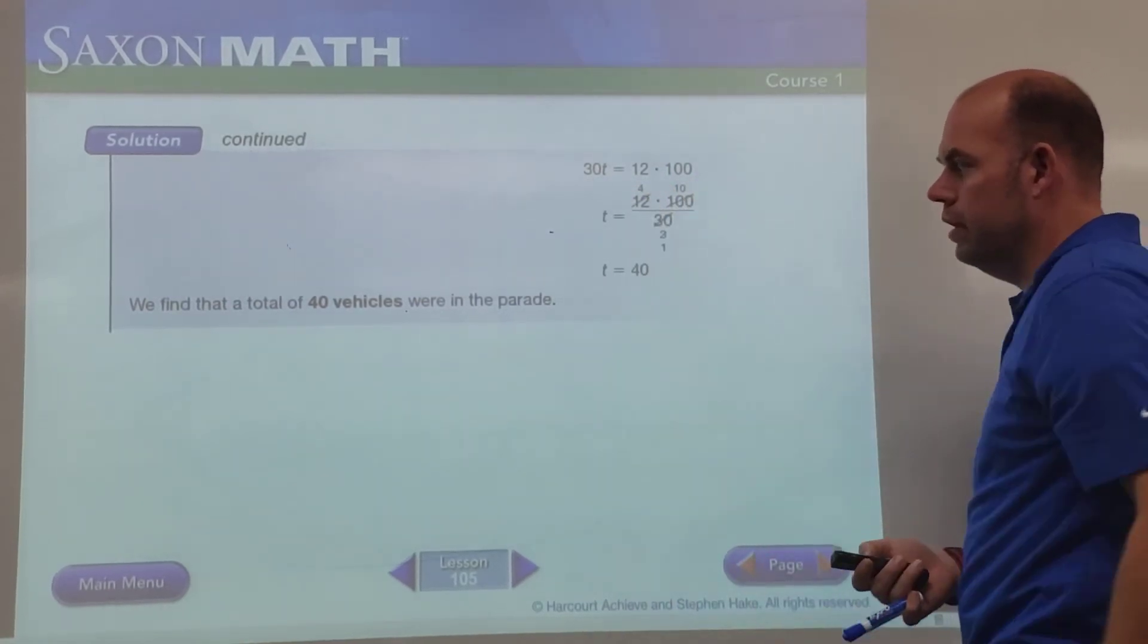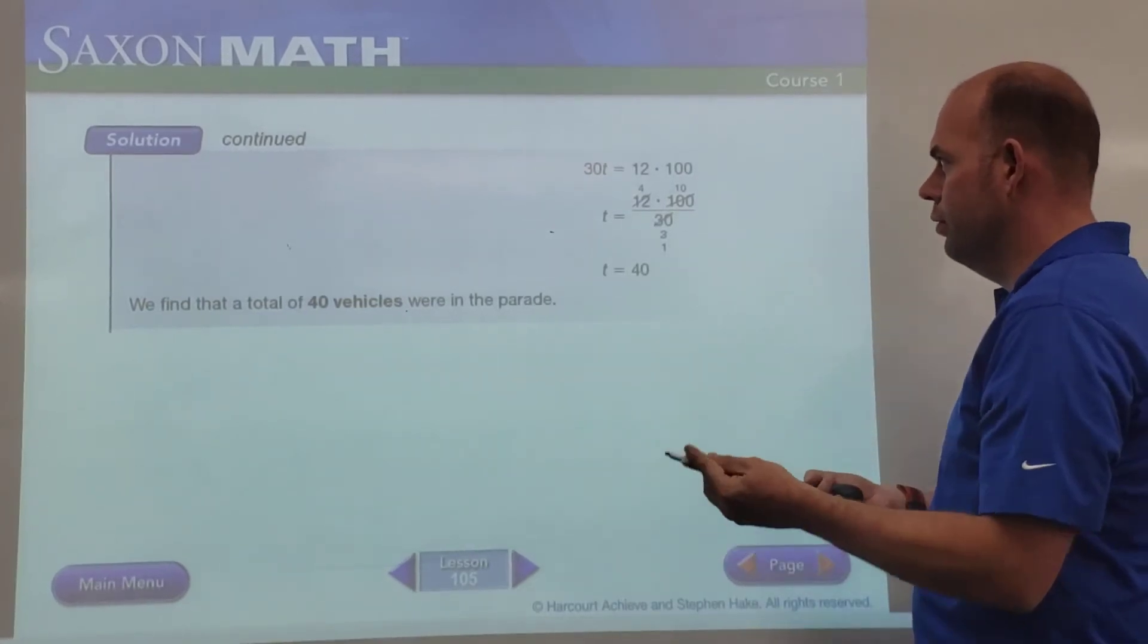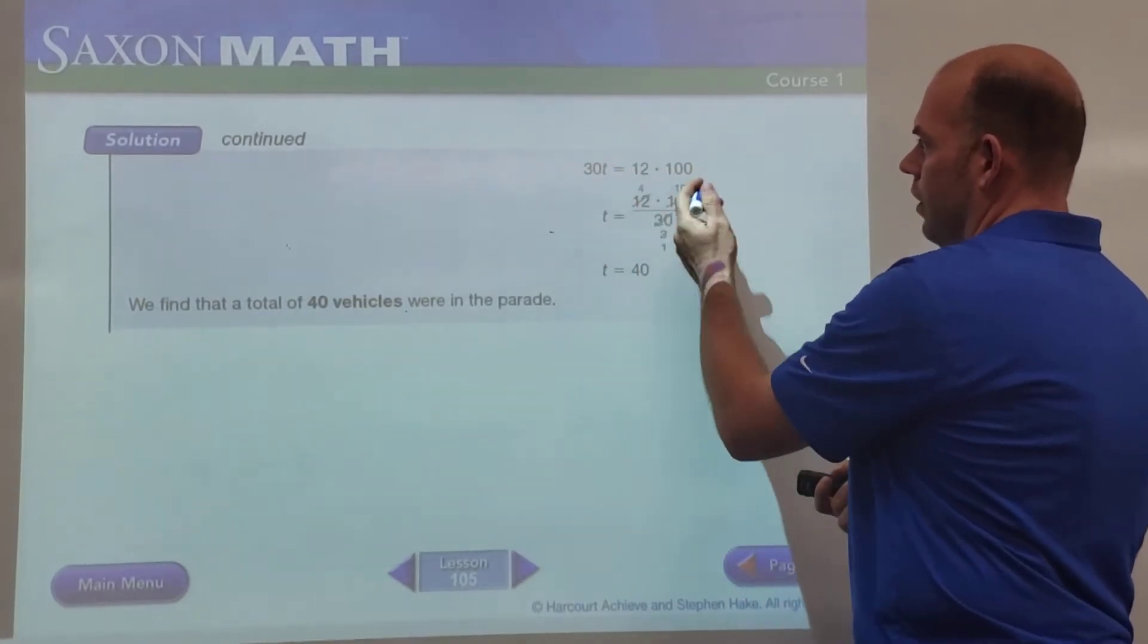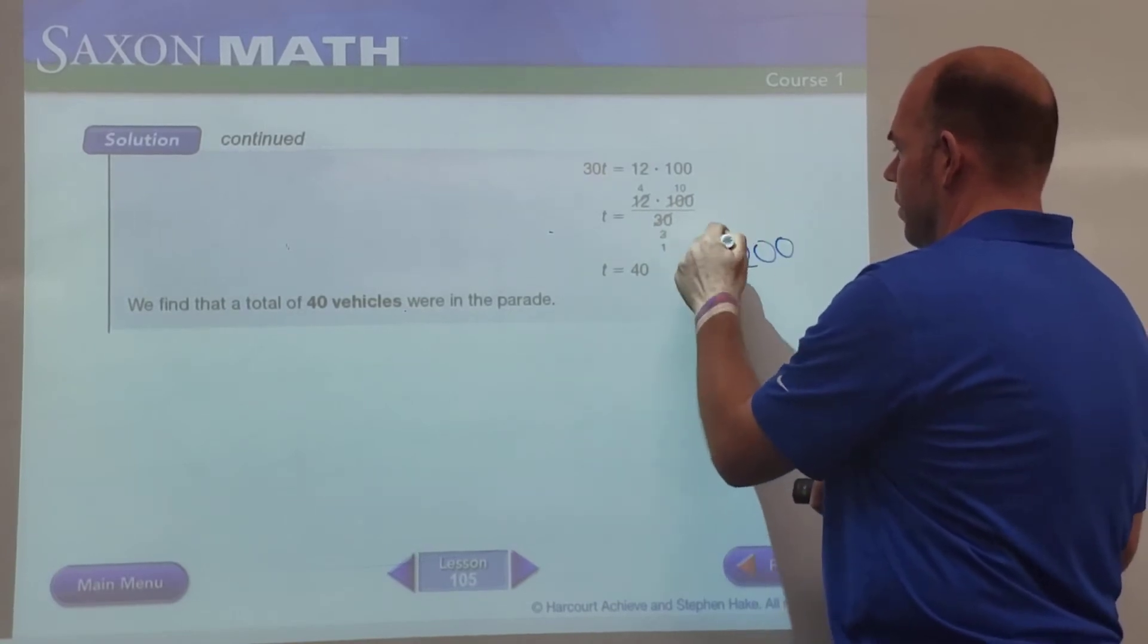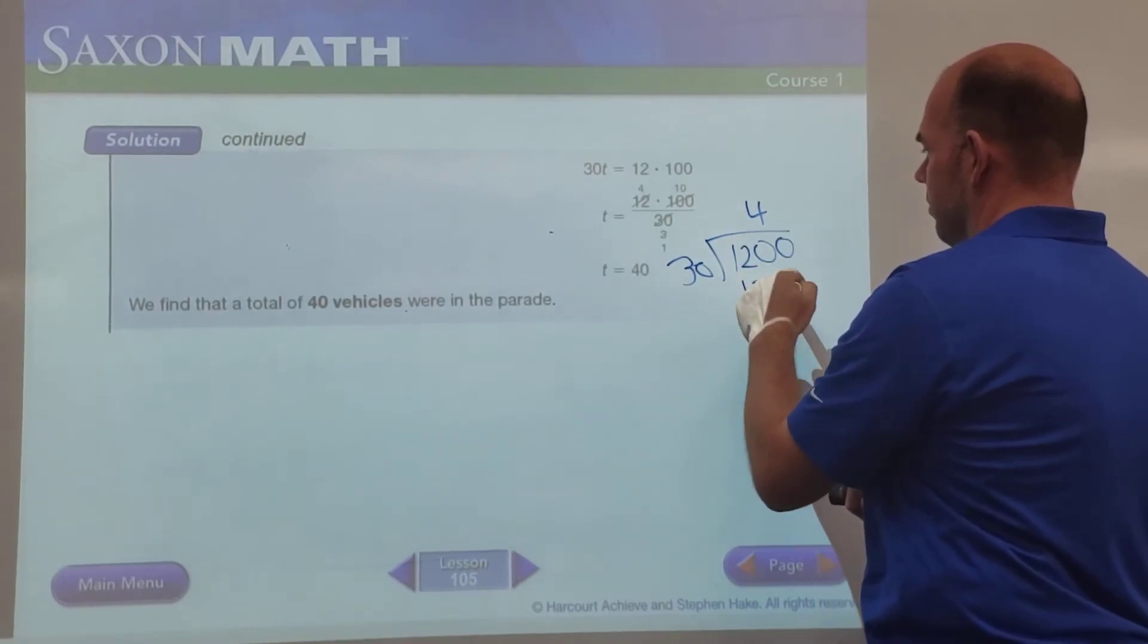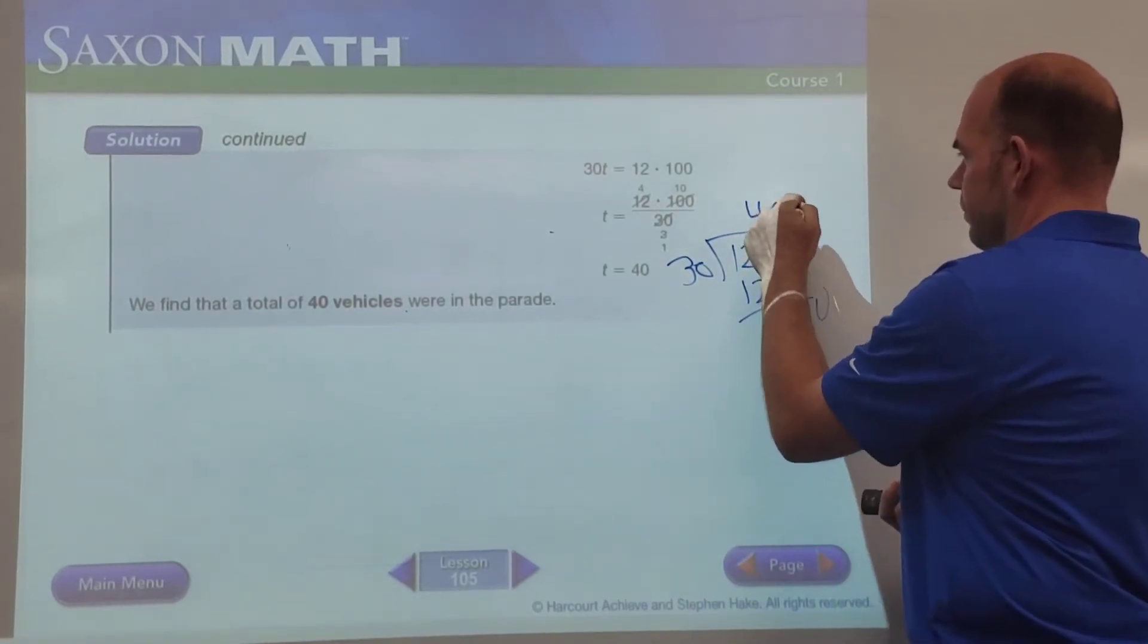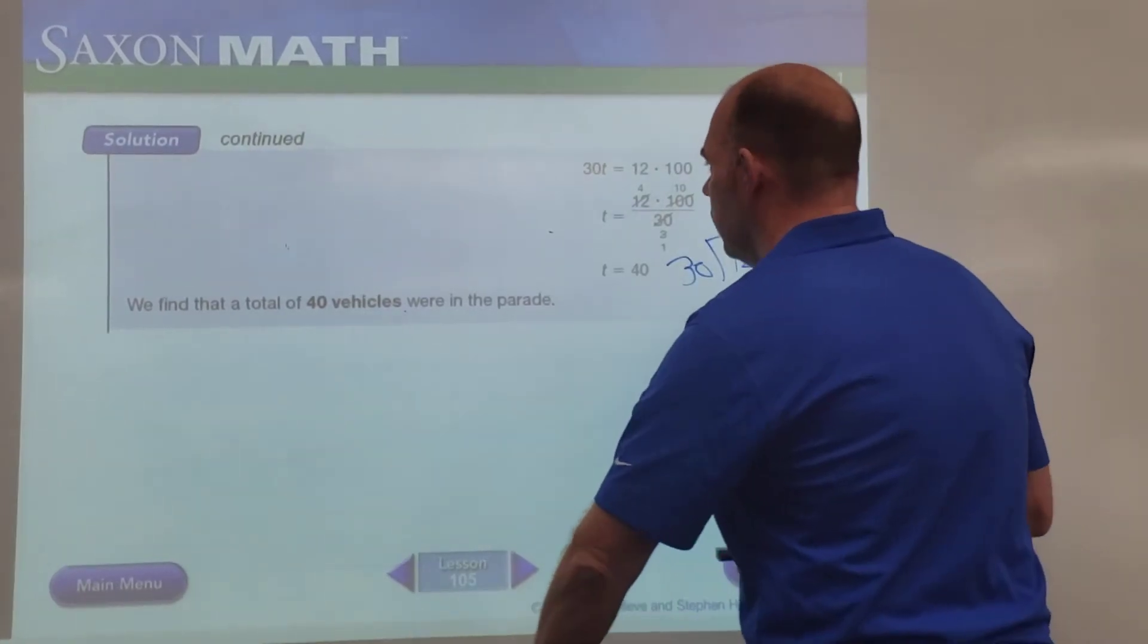So 4 times 10 is 40. We get 40. So you can do it that way, or you can just do 30t equals 1200 and then divide 1200 divided by 30, and that will still just give us 40. So it just depends on how you want to solve it.